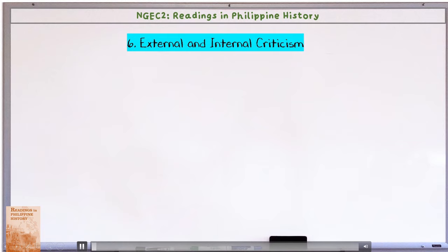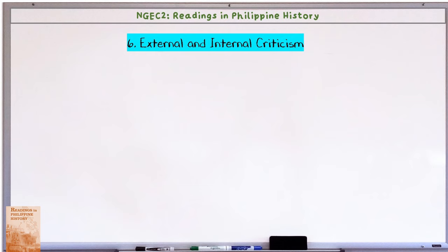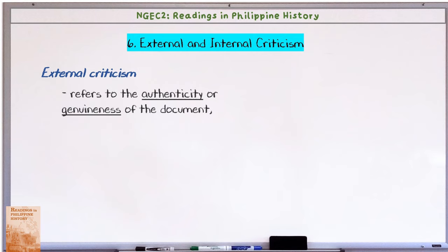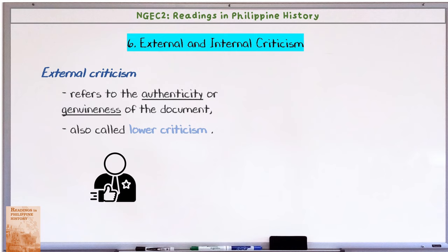Our topic now is external and internal criticism, which is in line with primary and secondary sources. External criticism refers to the physical data — what you see. External criticism refers to the authenticity or genuineness of a document, also called lower criticism. For example, if there is an autopsy report, you would criticize whether it is an authentic document or just made by someone.